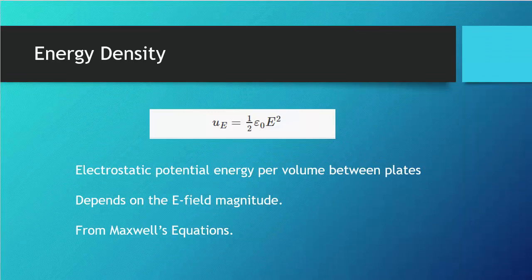Now we'll talk about the electrostatic potential energy per volume, or the energy density. To distinguish it, we use a lowercase u instead of a capital U. It is dependent on the magnitude of the electric field and comes out of Maxwell's equations. We're not going to dig too much into Maxwell's equations until we get into light.